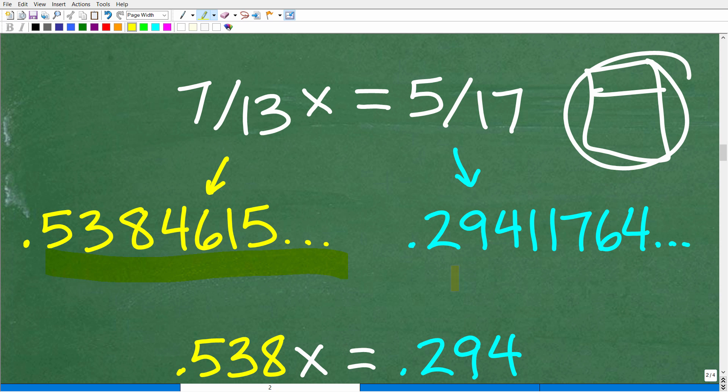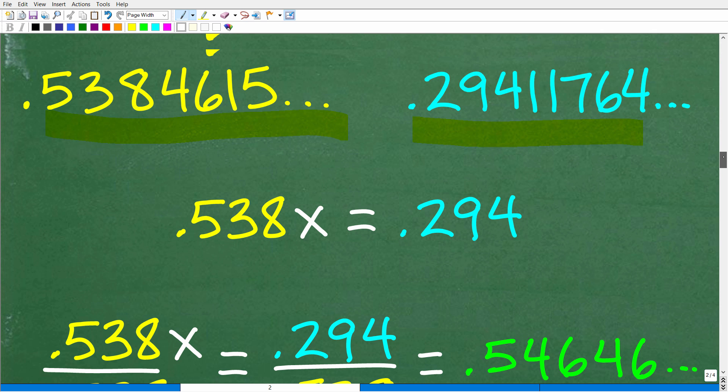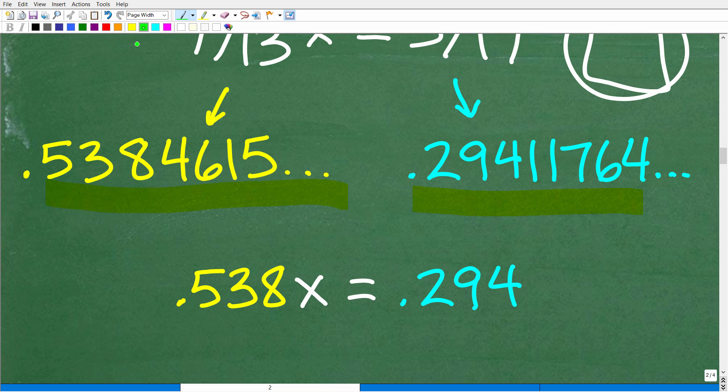So what students would do, again, they'll change their fractions into decimals, and then they will kind of just round off. They'll be like, all right, let me see here. I'm definitely not using all of this. Maybe I'll just take the first three decimals here and the first three decimals here. Place values, right, 0.538x is equal to 0.294.